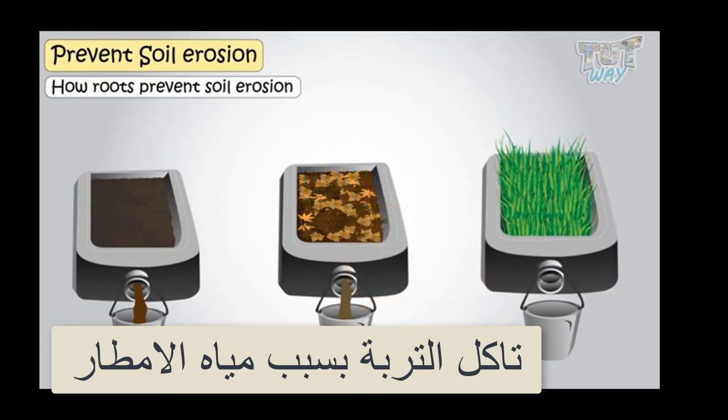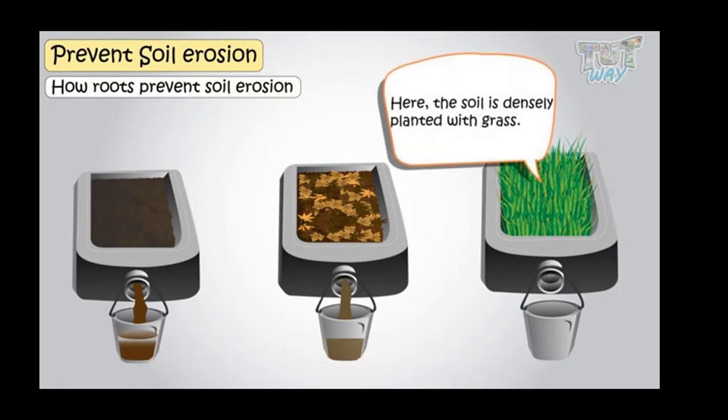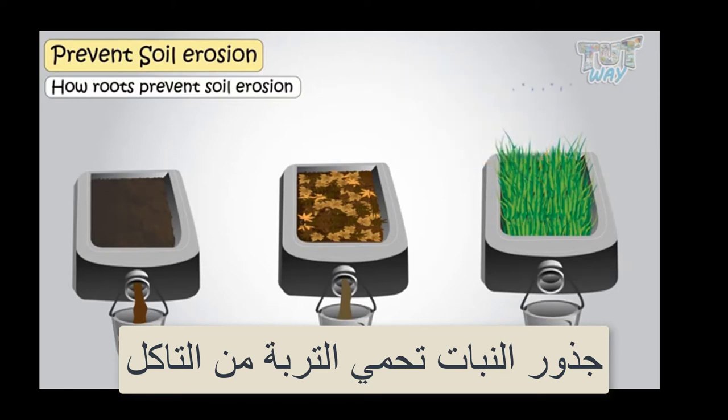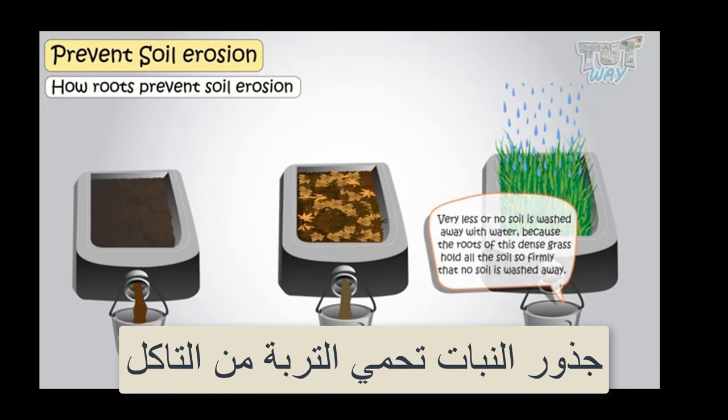Here we have a third container of soil, and here the soil is densely planted with grass. Now if you let the water flow above soil in this container, very little or no soil is washed away with the water, because roots of this dense grass hold all the soil so firmly that no soil is washed away.